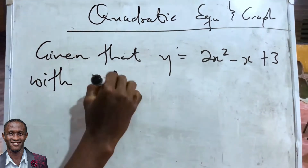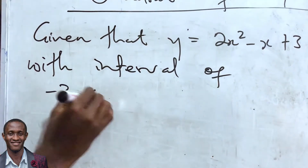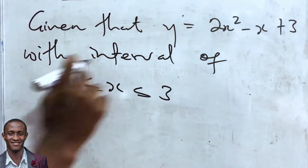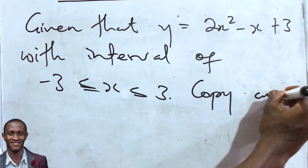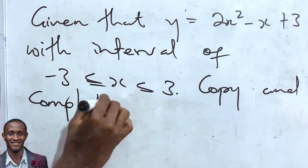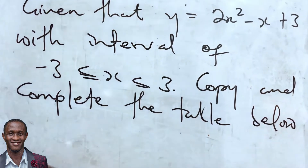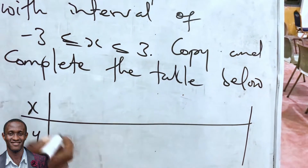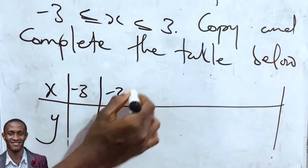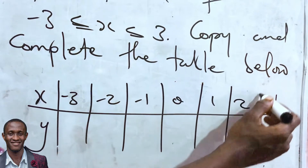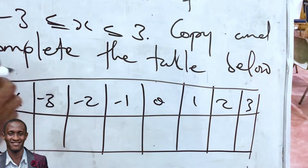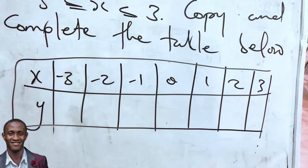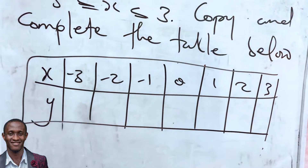The question gives an interval, say -3 ≤ x ≤ 3, and says copy and complete the table below. You have your x values: -3, -2, -1, 0, 1, 2, 3, and a corresponding y row. They may also ask about the turning point and other features.